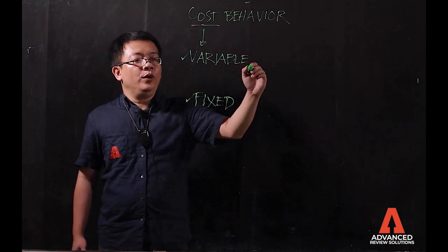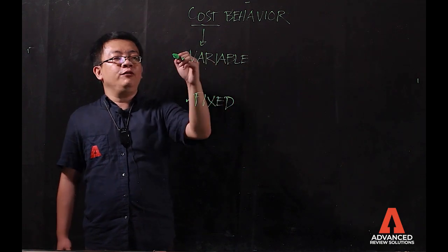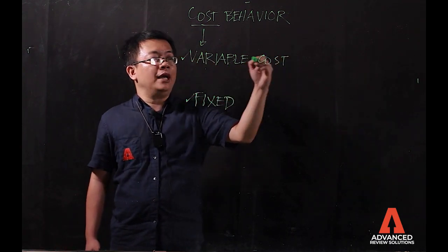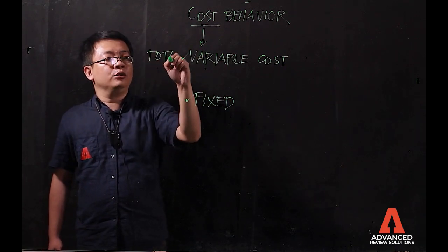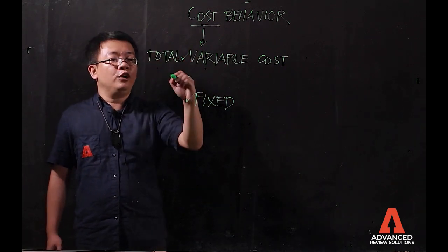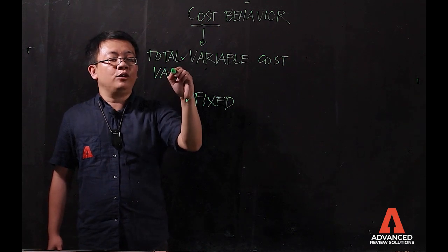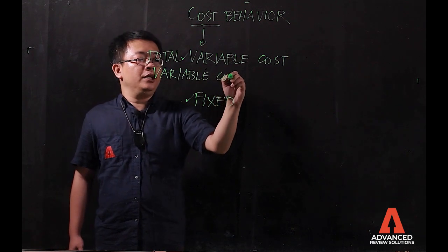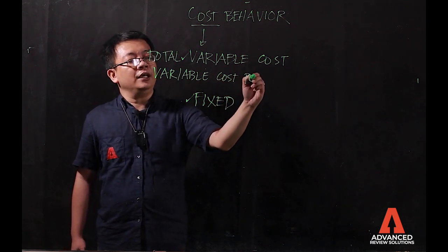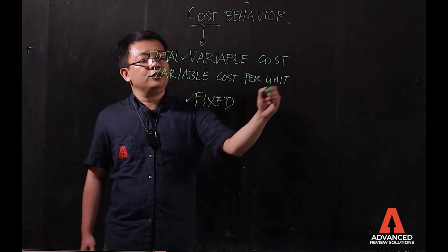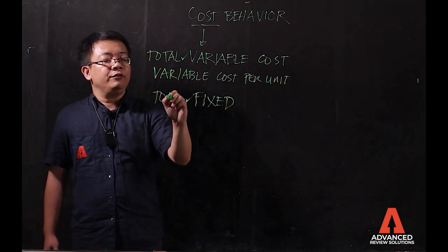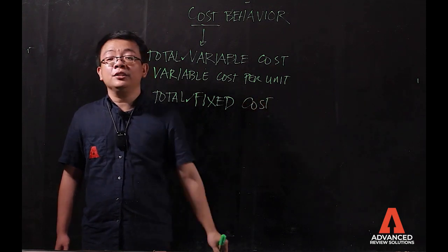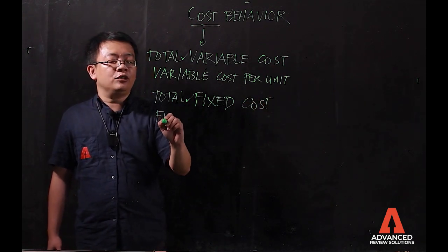The question is: what do you mean by variable cost? You have your variable cost total, you have your variable cost per unit, and you have also your total fixed cost and your fixed cost per unit.